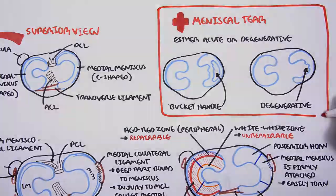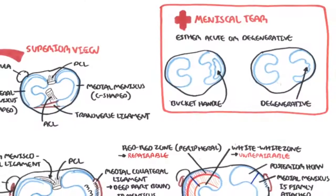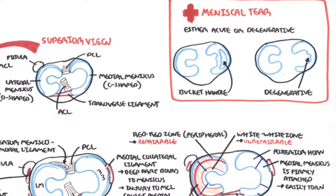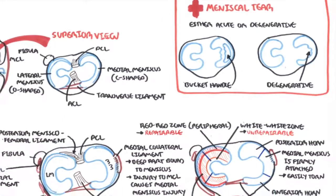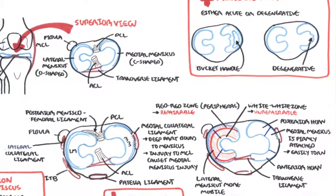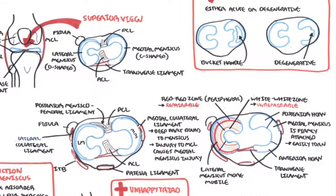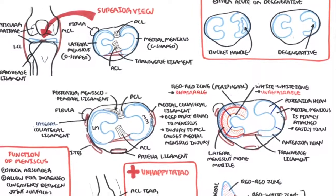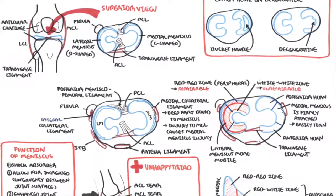These injuries can present with the sensation of catching or the knees locking. Knee locking is essentially where the torn meniscus, if it is big enough, it can get caught between the tibia and the femur bone essentially. And this is known as the locking sensation or the knees catching. I hope you enjoyed this video on the clinical anatomy of the knee menisci. Thank you.